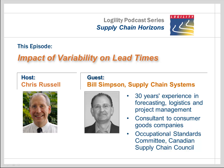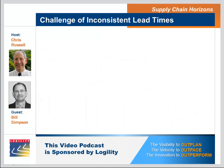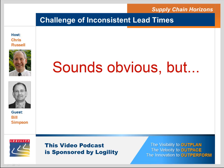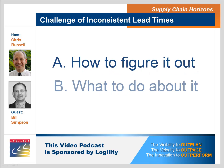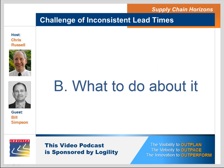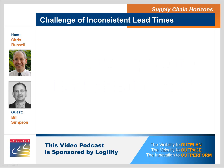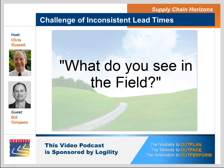We've been talking over the last couple of weeks about the impact of variability in your lead times. It sounds like a pretty obvious thing, but in our conversations we've discovered that it's fairly nuanced, and we've got some strategies on how to figure it out and how to do something about it. So what's the challenge of an inconsistent lead time? What are you seeing in the field?